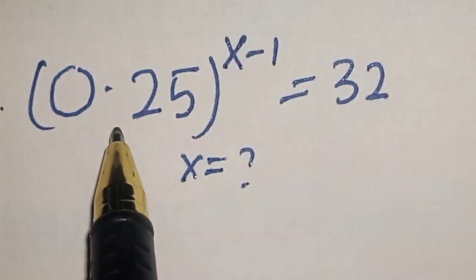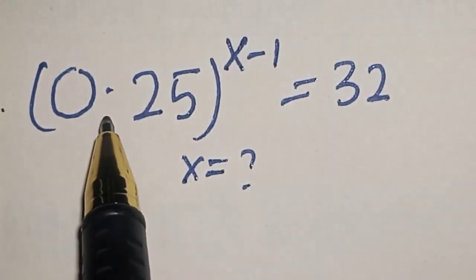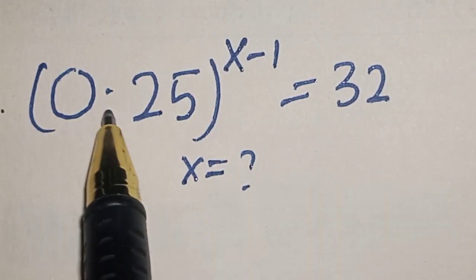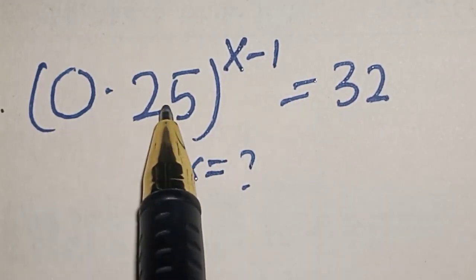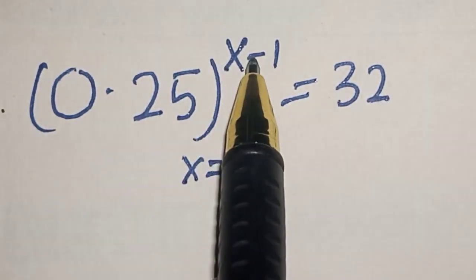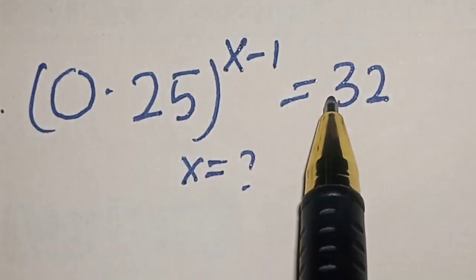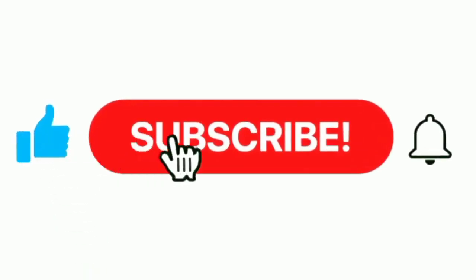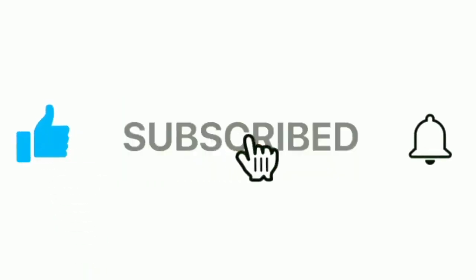Hello, welcome to MathGist. In this class we want to find the value of s from this equation: 0.25 raised to power x minus 1 is equal to 32. Kindly like, share, comment and subscribe.